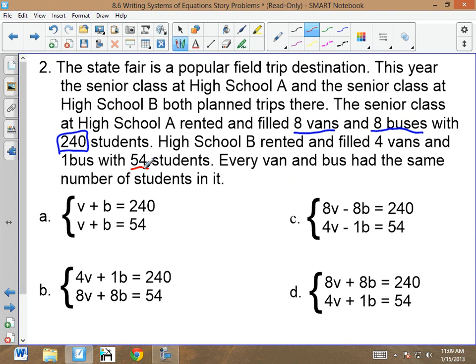School B had 54 kids, and they got 54 kids there by filling four vans and one bus. So we're looking for four vans, one bus equals 54. Four vans, one bus equals 240? No. One van, one bus equals 54? No. Minus, I know is wrong, four vans, one bus, 54. That's it. Because the other one is eight vans and eight buses is 240.